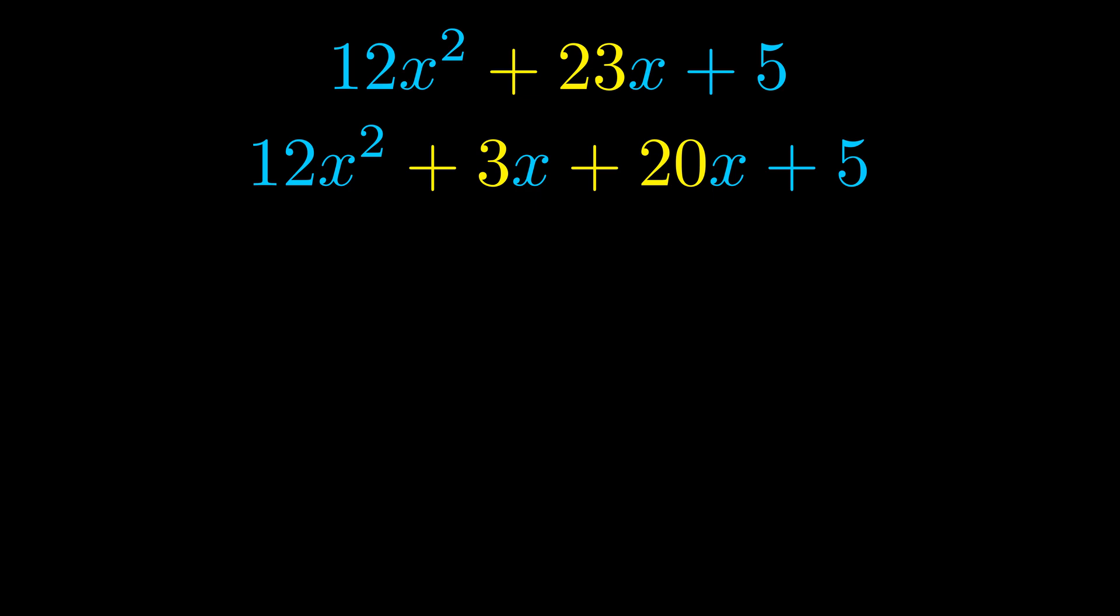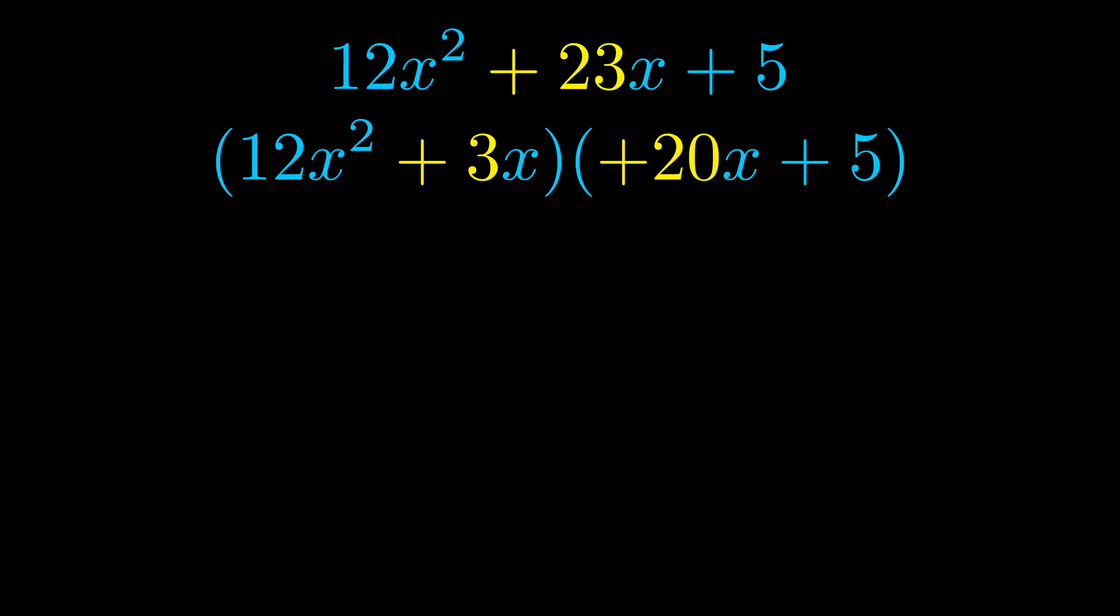Once we've done this, we go ahead and put parentheses around the first term and the last term. And we do that so that we can take the greatest common factor out of both terms. We can see the greatest common factor is now outside in green.